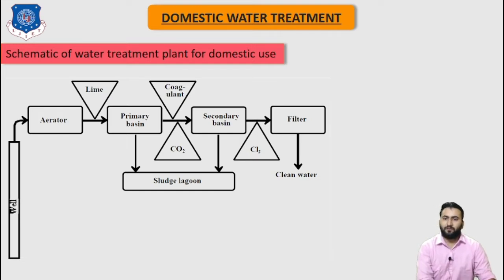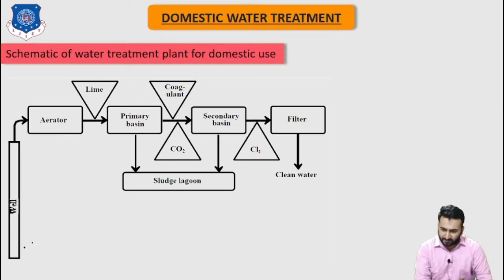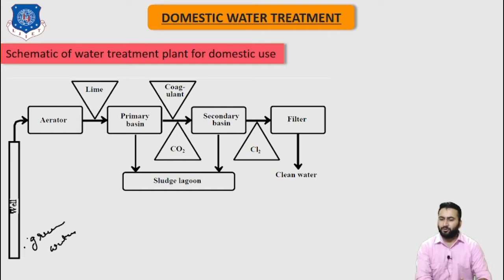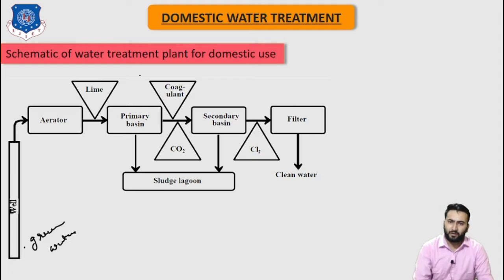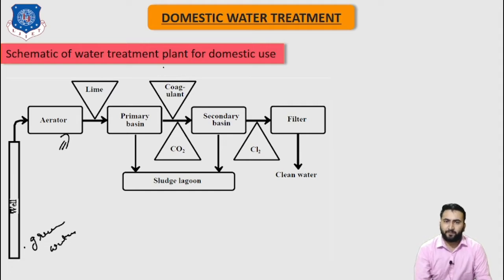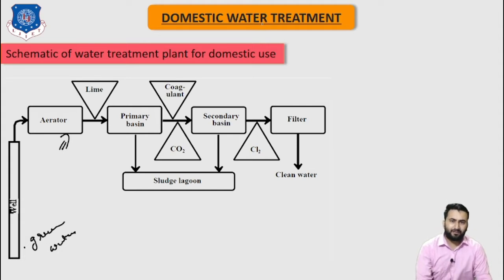This facility treats water containing excessive hardness and high levels of iron. The raw water is taken from the wells — that is, groundwater. The raw water taken from the wells first goes to the aerator, where contact of water with air removes volatile substances such as hydrogen sulfide, carbon dioxide, methane, and volatile odor substances.